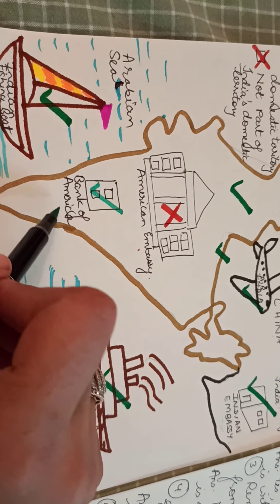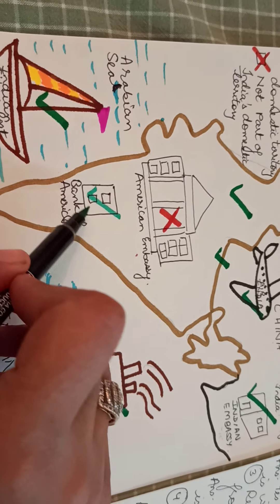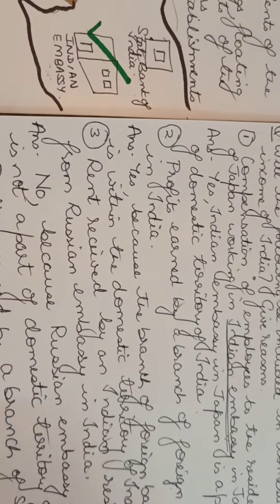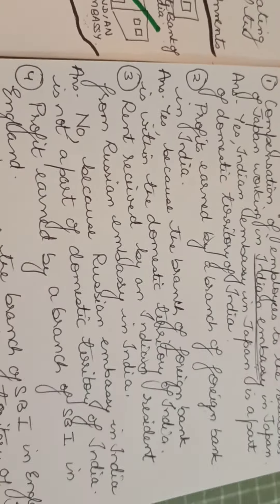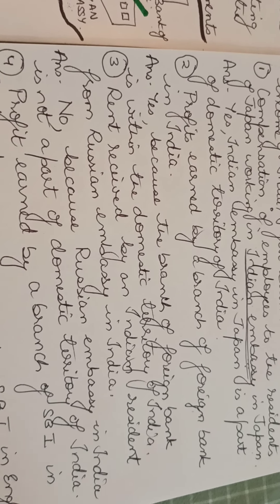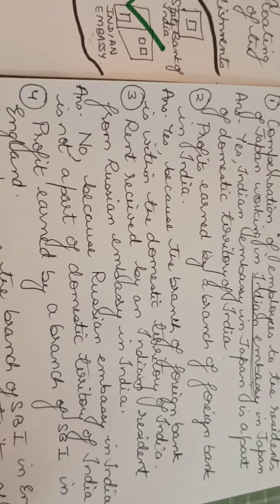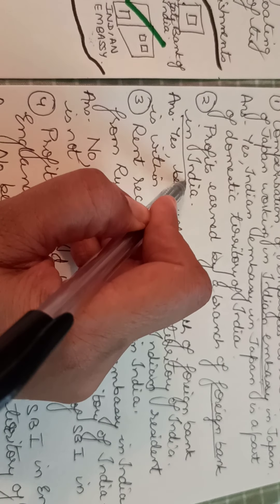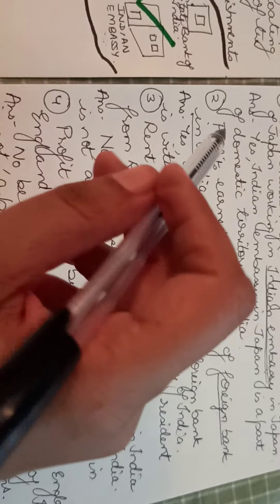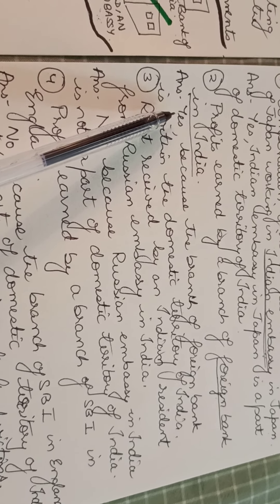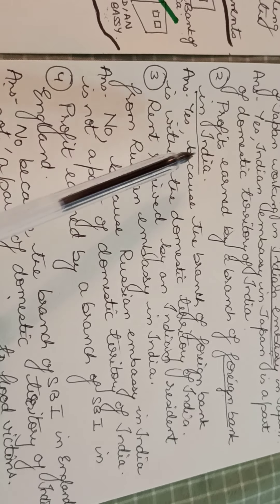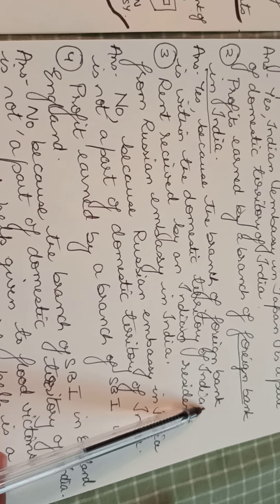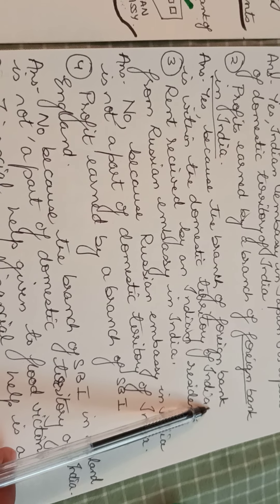And hence, the profits earned within this bank will be part of India's domestic income. The profit earned by a branch of foreign bank in India — the foreign bank is located in India's domestic territory and hence it is part of India's domestic income. Answer is yes, because the branch of foreign bank is within the domestic territory of India.